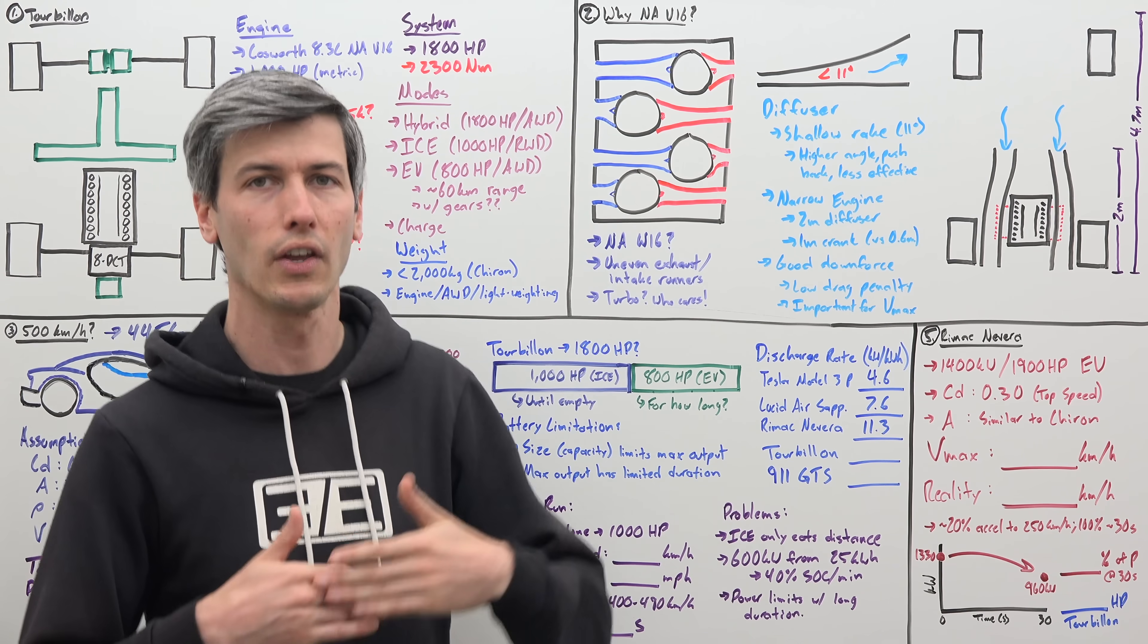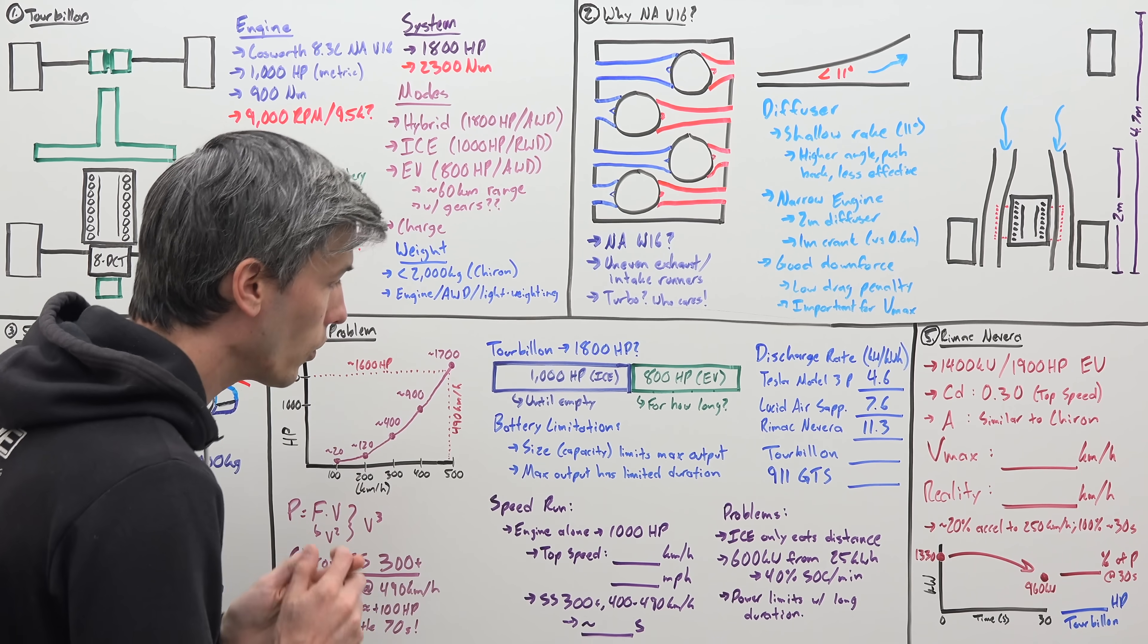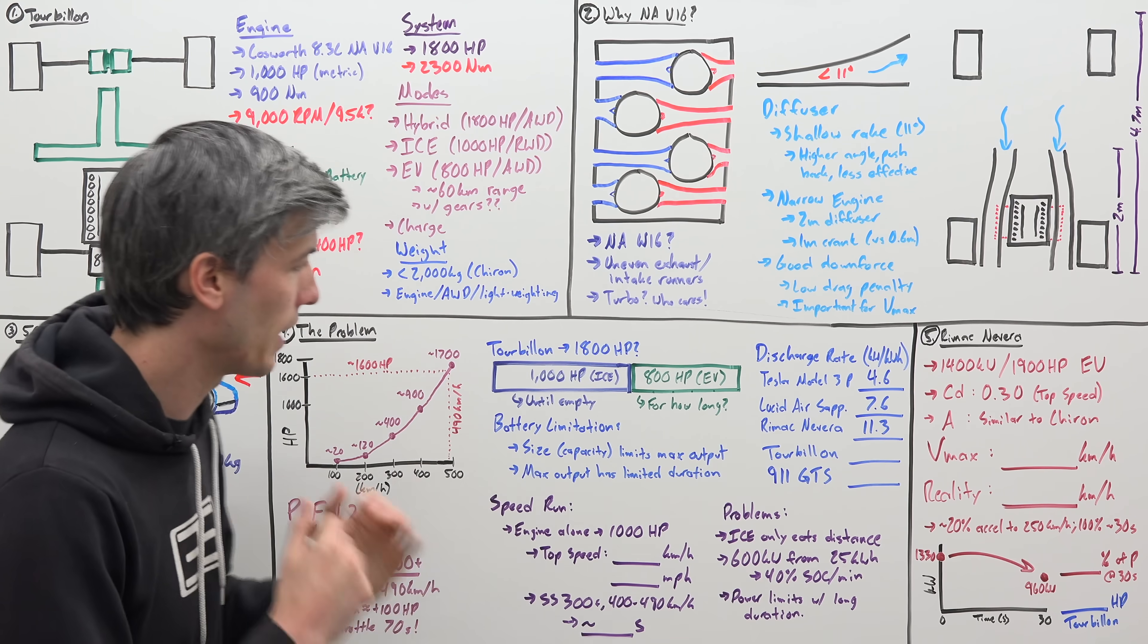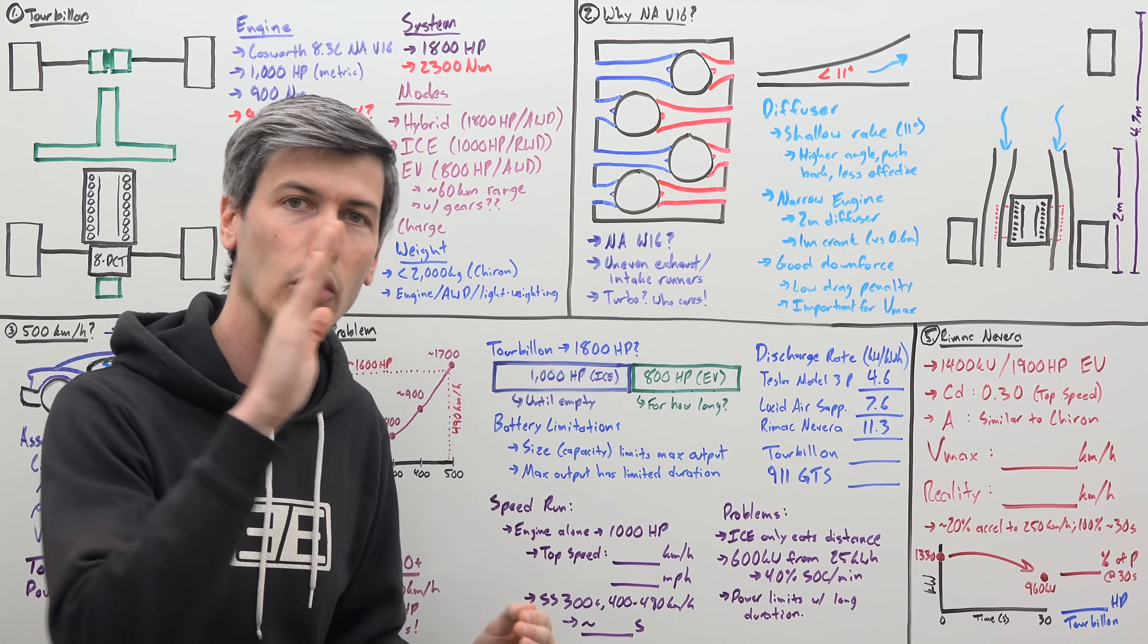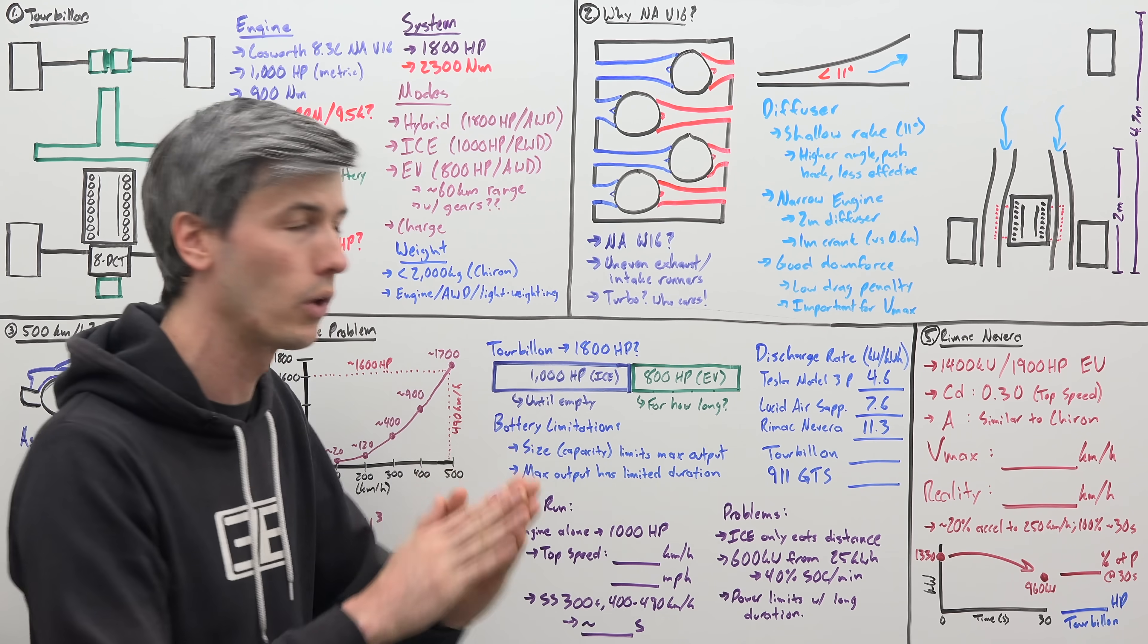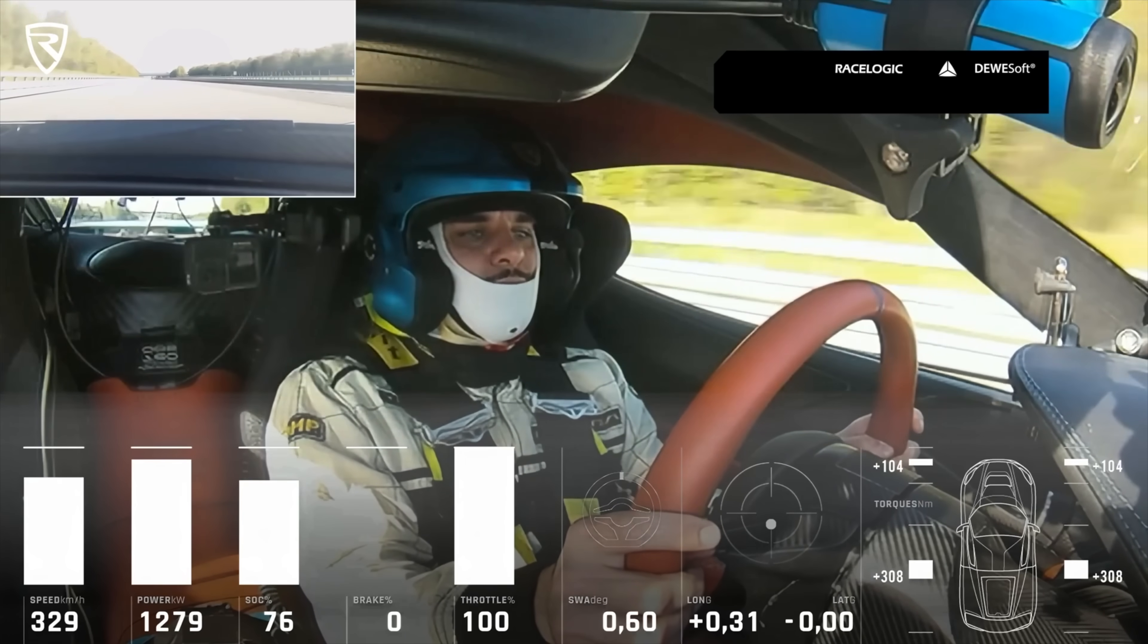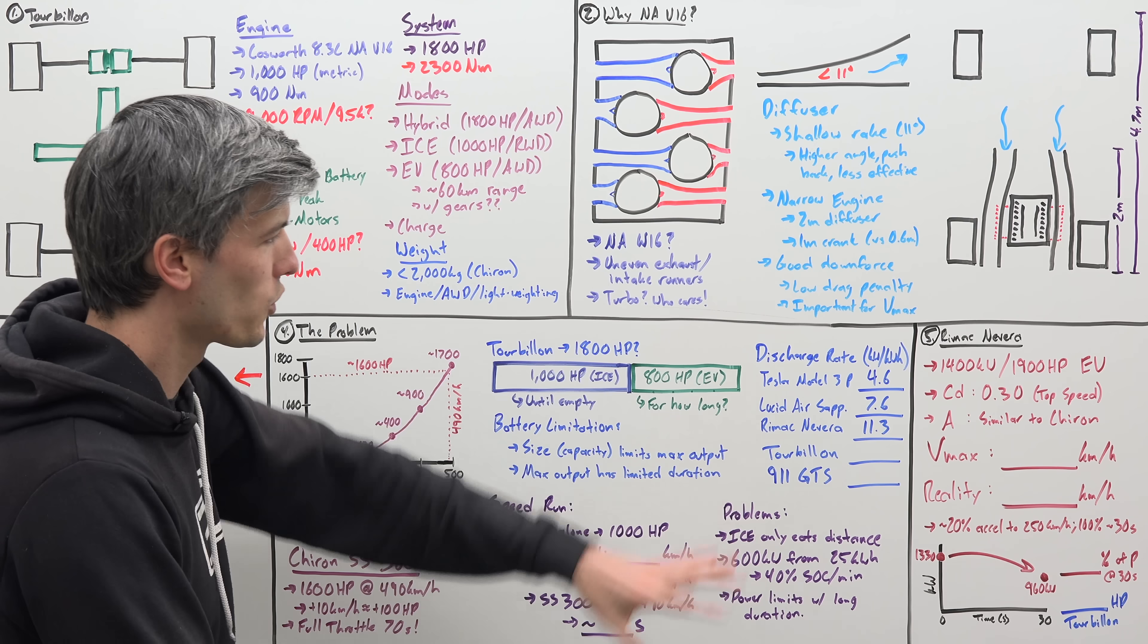So the size of a battery determines how much power can it put out. The larger the battery, the better. And then also, there is a limited duration on how much time a battery can supply its maximum output. There's a lot of reasons for this. But the point is, the longer you floor it in an EV without letting off that accelerator pedal, eventually, that power starts to drop. Now, this is especially true if you're really pushing the limits of that battery with a really high discharge rate.